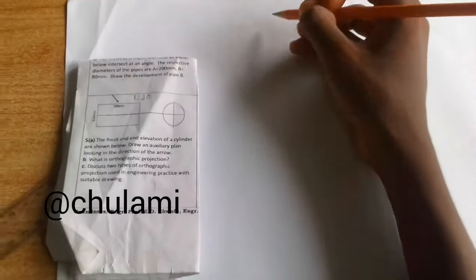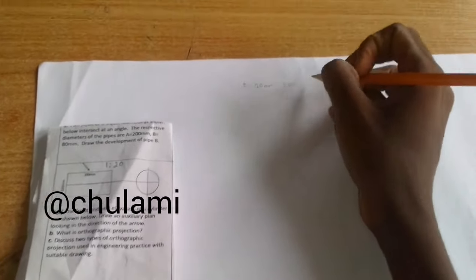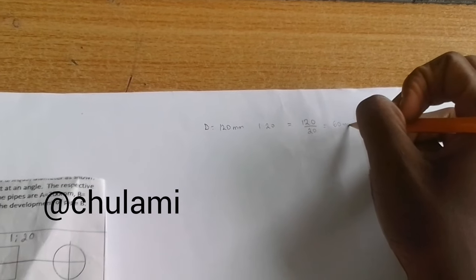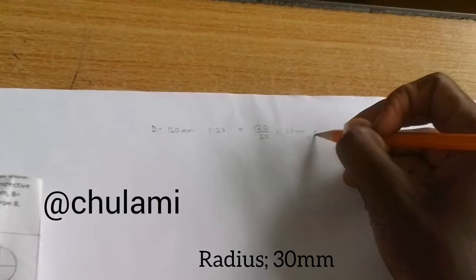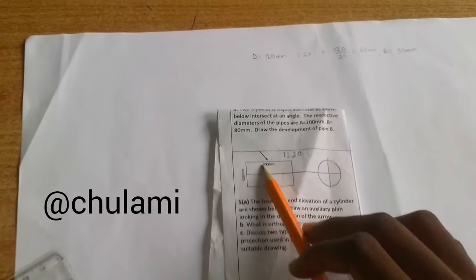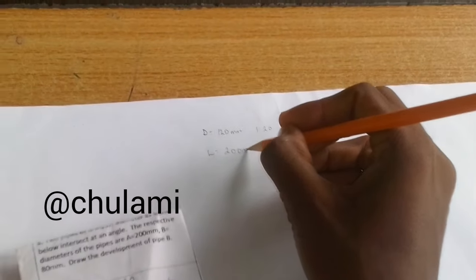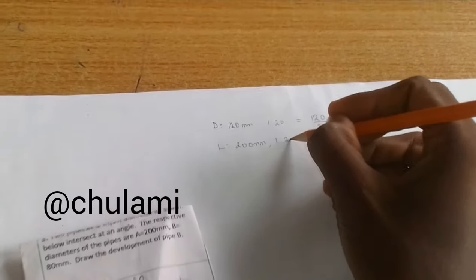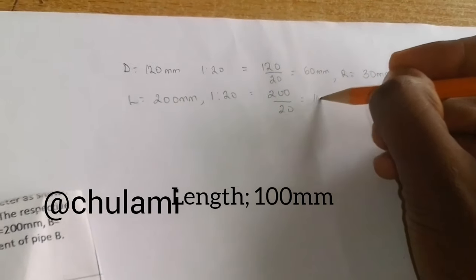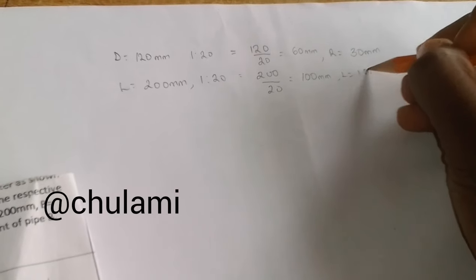I would love us to use a scale of 1 is to 20. That is to say, whatever thing I'm having, I'm dividing by 20. So if the diameter is 120mm, 120 divided by 20 equals 60mm. That's the diameter of the circle.